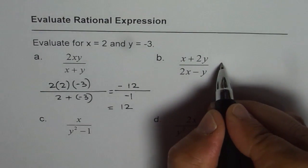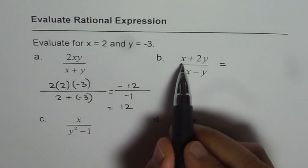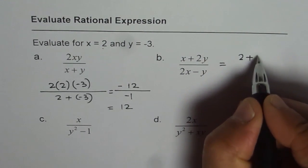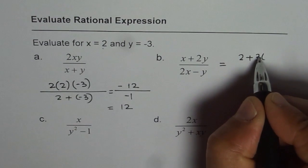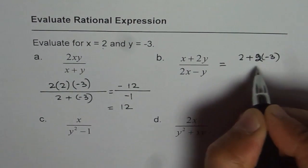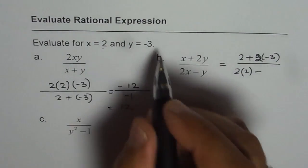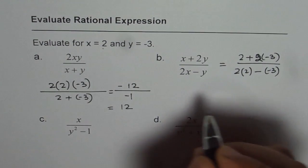Let us do the next one. In this case, I will substitute x as 2, y as minus 3. So, we get 2 plus 2 times minus 3 divided by 2 times 2 minus y is minus 3, correct?